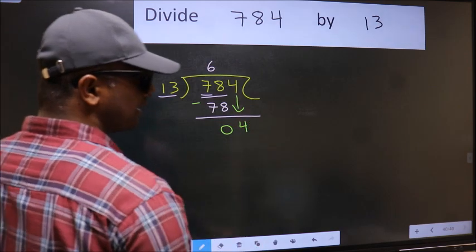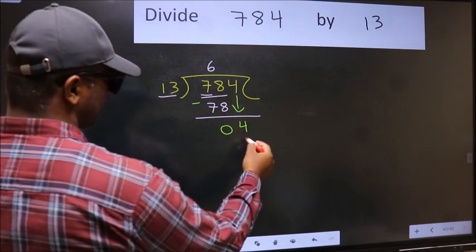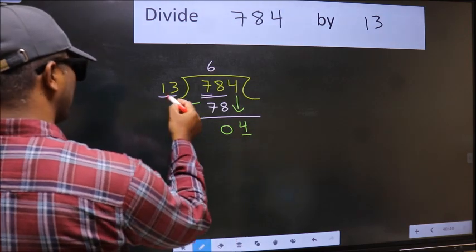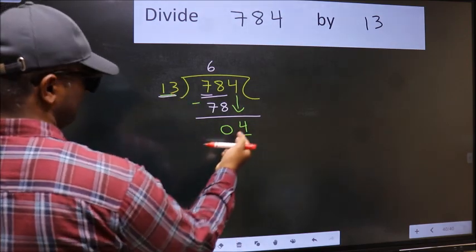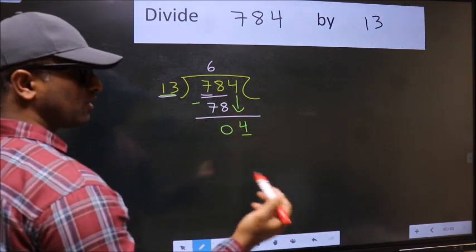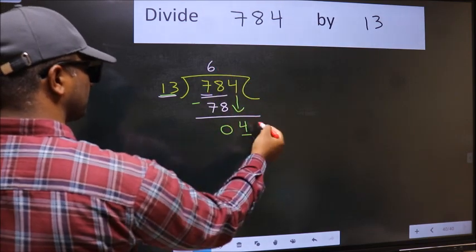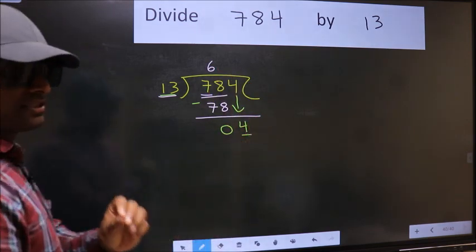After this step, the mistake happens. And the mistake is this. Here we have 4 and here 13. 4 is smaller than 13. So what many do is, they directly put dot, take 0. Which is wrong.